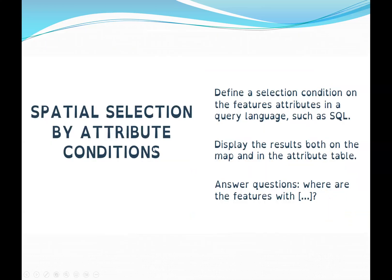Next is spatial selection by attribute condition. Here we define a selection condition on the features' attributes in a query language such as SQL — the Sequential Query Language, which is a scripting language used a lot in database systems. We always have to have a condition. For example, select customers from the relation table where the city is Bronx, or where the area is less than 400,000. We call these queries select queries.